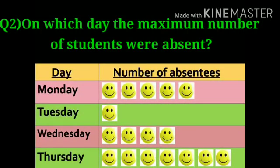The next question is: on which day was the maximum number of students absent? We can see clearly that on Thursday there are seven smileys, which is the maximum number.